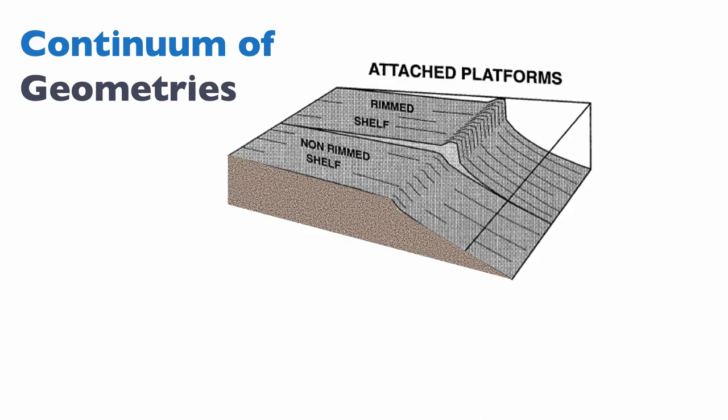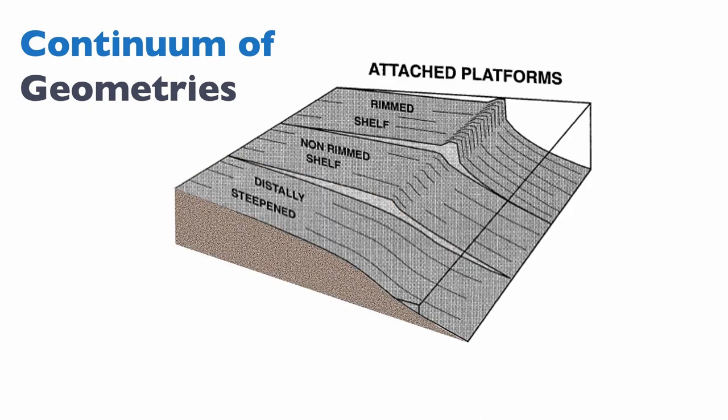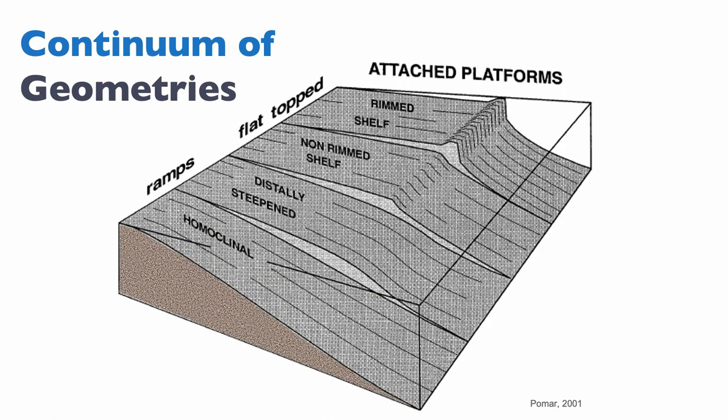Other than shelves, you can have ramps. Ramps can either be distally steepened — that means you have a relatively low angle ramp at first, but towards the end of that low angle ramp, you have a steeper angle — or you could just have a homoclinal ramp, which is essentially a gently sloping ramp all the way down to the basin. So we have a continuum of geometries from a flat top attached rimmed shelf all the way to a homoclinal shelf, and we're going to try to see what controls those geometries.